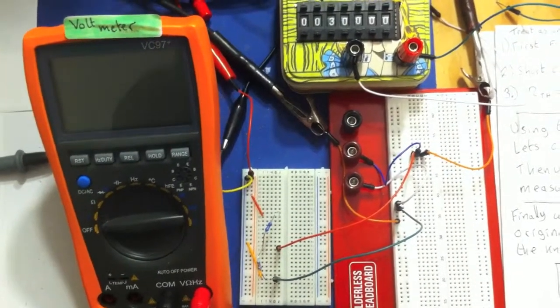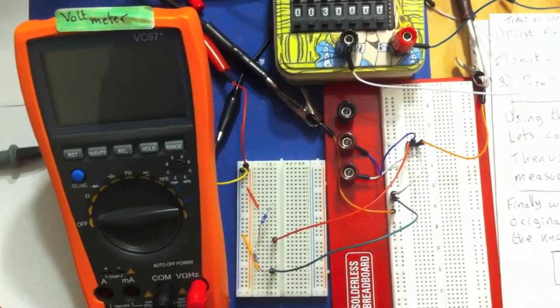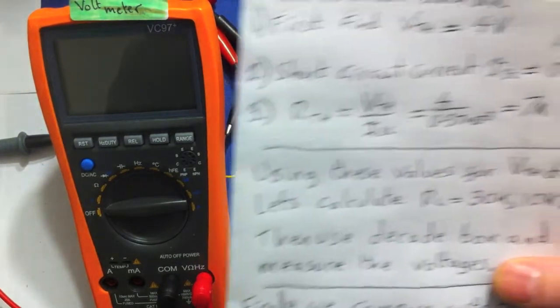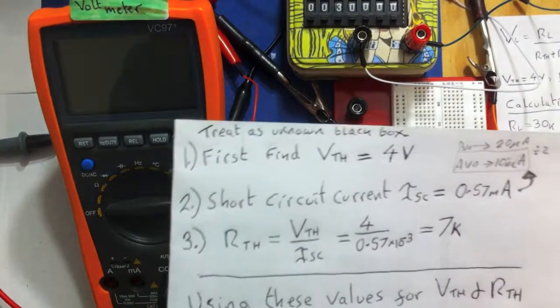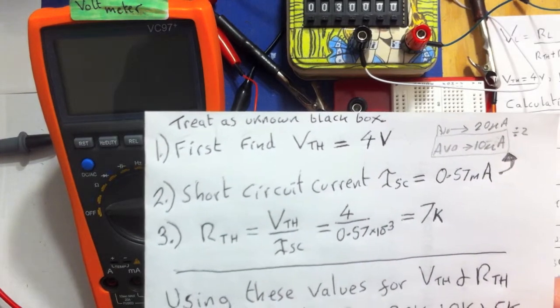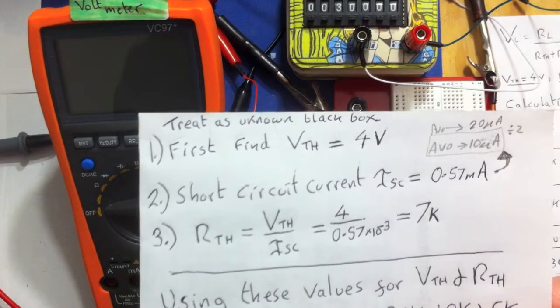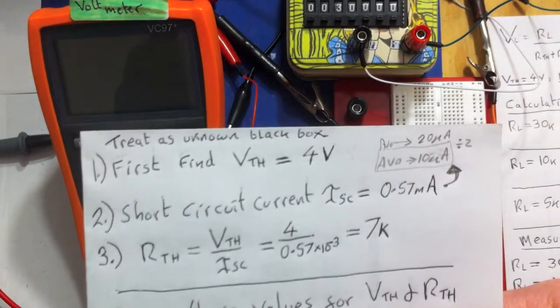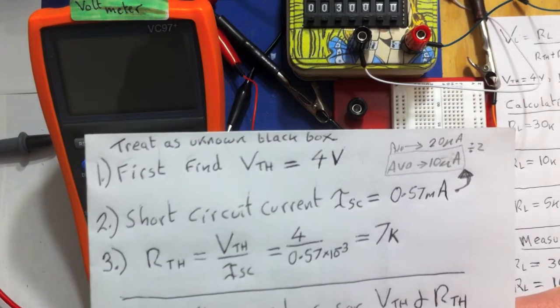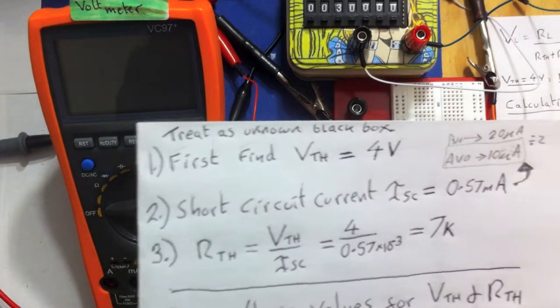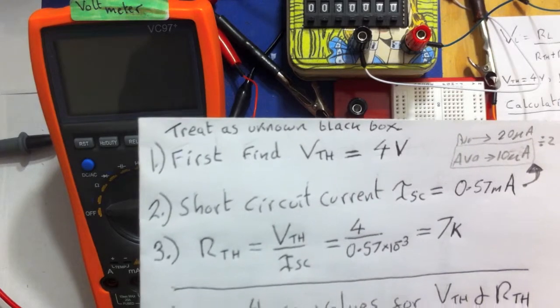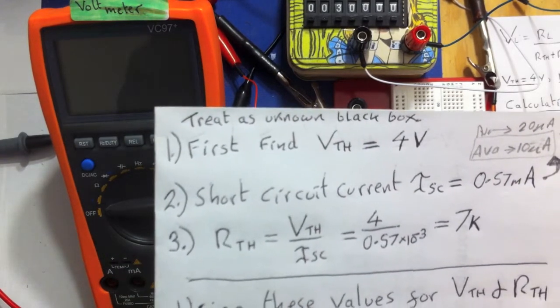So what I'm going to do now is write down what I've got here. So I've already written this down. What we've got so far is we found the Thevenin voltage by using the brute force method, which was four volts, and we found the short circuit current ISC equals 0.57 milliamps.